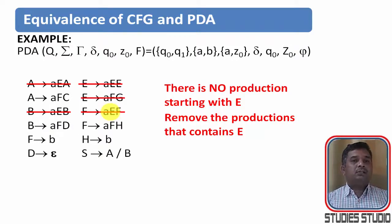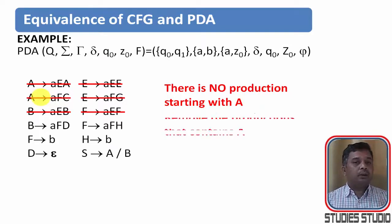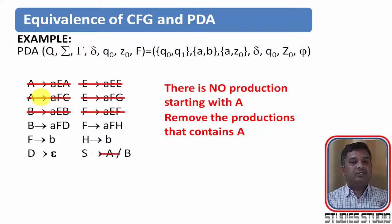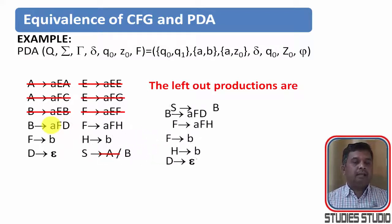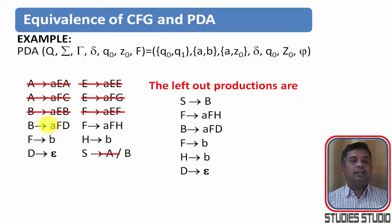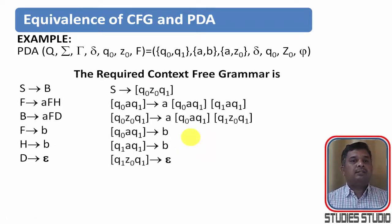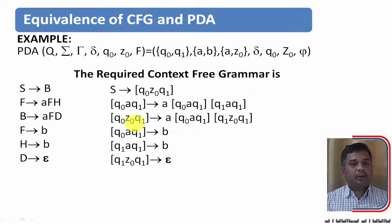With C removed as there is no production for it, and similarly no production starting with A, we remove the production S derives A. After removing all non-generating and non-reachable symbols, we are left with the remaining valid set of productions. We then replace those simplified symbols back with the original variable notation to get the final context-free grammar.